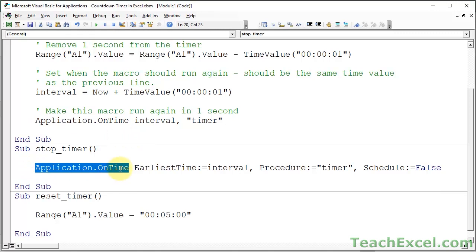So here we have application dot on time. And what I did in this case is here I've showed you two different ways essentially to write out the same thing in a macro. So here I have the name of the argument and a colon and an equal sign. So earliest time and procedure and schedule.